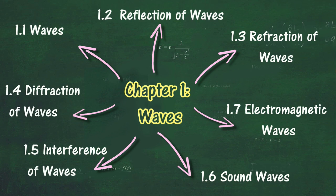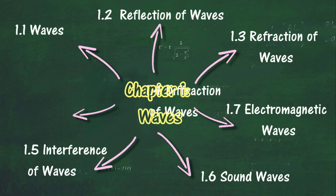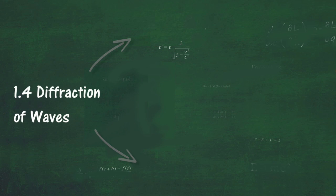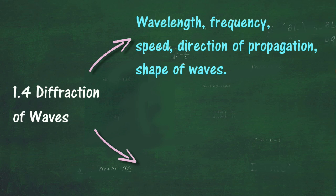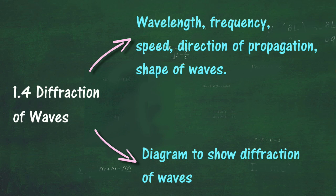In Section 1.4, we will learn about diffraction of waves. At the end of this section, you should be able to describe diffraction of waves in terms of wavelength, frequency, speed, direction of propagation, and shape of waves, and draw a diagram to show diffraction of waves.